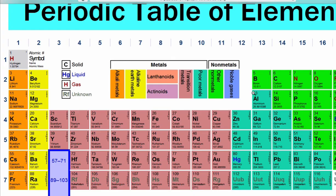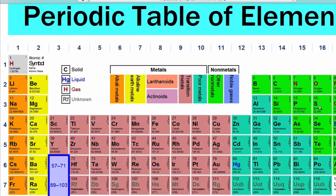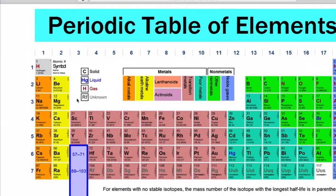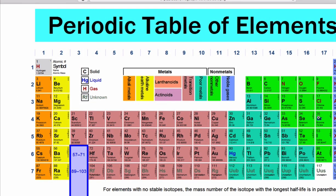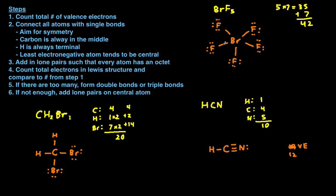Wait — doesn't everything want to have eight valence electrons? Why is bromine okay with ten? Because there are exceptions to the octet rule. Bromine is in the fourth row of the periodic table, and any element in the third row or below can have more than eight valence electrons — that's why bromine is okay with ten. Counting the total electrons in the structure, we get forty, but we need forty-two, so we don't have enough. When we don't have enough, we add lone pairs to the central atom. We're missing two, so we just add a lone pair to bromine, giving us a total of forty-two valence electrons, which matches.